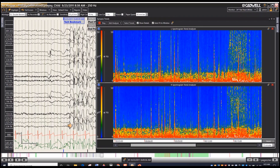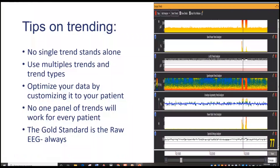This may be an imperfect tool, but the intent is to draw your attention to specific segments — and it does that quite well. To reiterate: no single trend stands alone; use multiple types and play one trend off the other. Optimize your EEG by customizing it to your patient, because no one set of trends is perfect for everyone. And the raw EEG is always the gold standard — the intent of the trends is simply to draw your attention to the raw EEG.